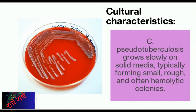Corynebacterium pseudotuberculosis is a gram-positive bacillus bacterium. Upon culturing, colonies appear slowly and have a rough texture that can also be hemolytic. It has been linked to a number of diseases such as abscesses, ulcerative lymphadenitis, and caseous lymphadenitis.